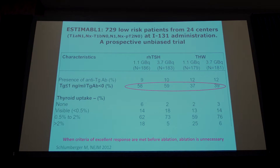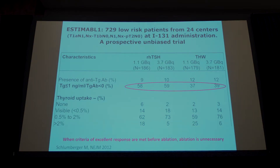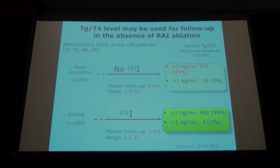Coming back to the STMAP prospective trial, we can see that the stimulated TG before ablation was already undetectable in 37 to 60% of patients. These patients, even before the administration of radioiodine ablation, can already be considered as ablated — there is no need for radioactive iodine in them. And from the Cosimo Durante study, even in the absence of ablation, TG becomes undetectable during follow-up in 95% of patients, and in the remaining few it is low and stable over time. So serum thyroglobulin can be used very reliably for follow-up even without ablation.